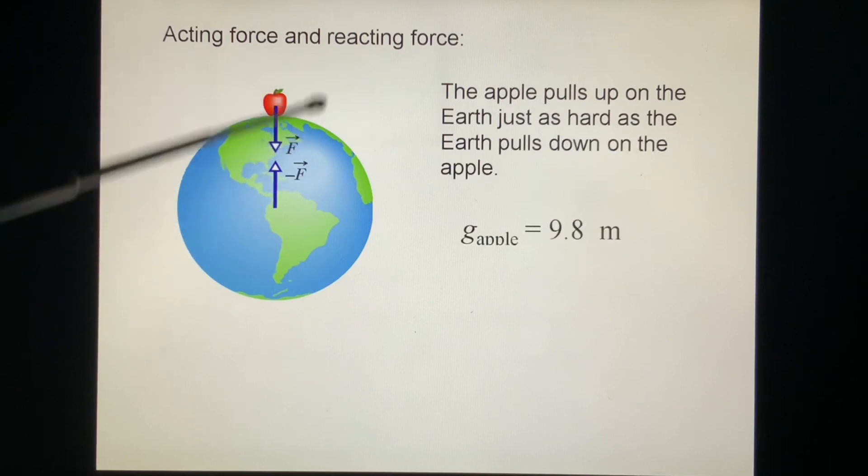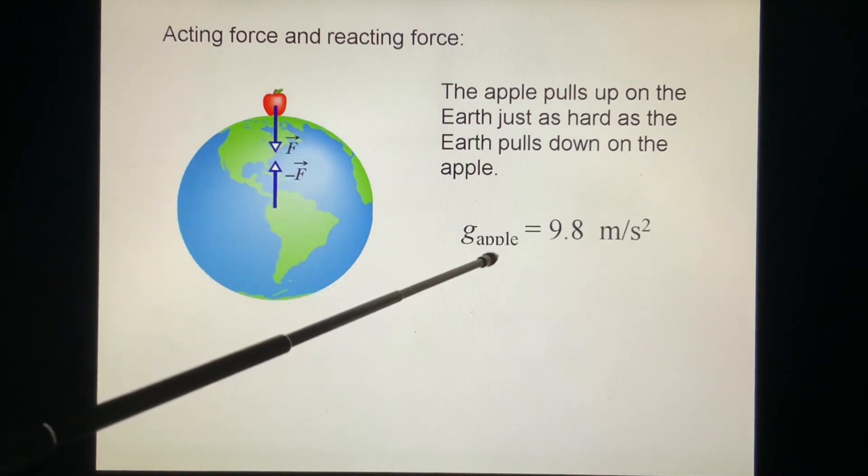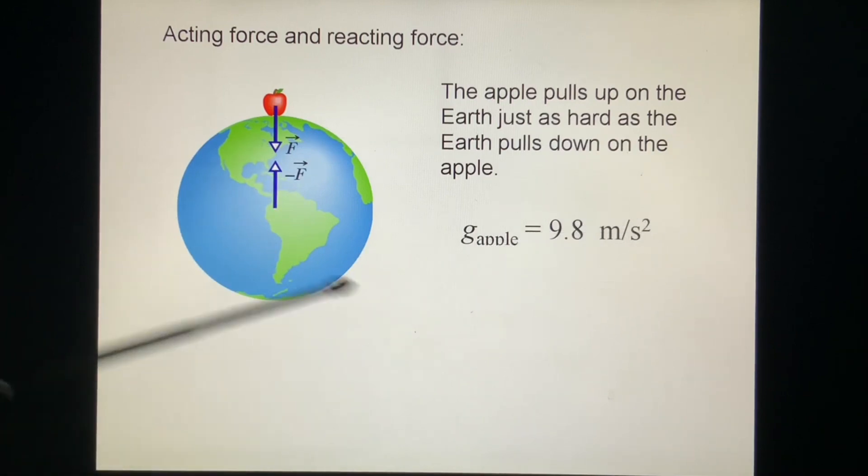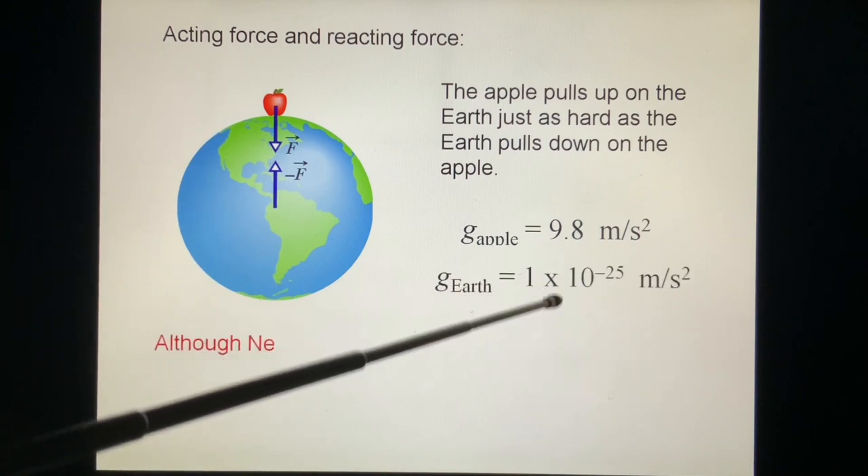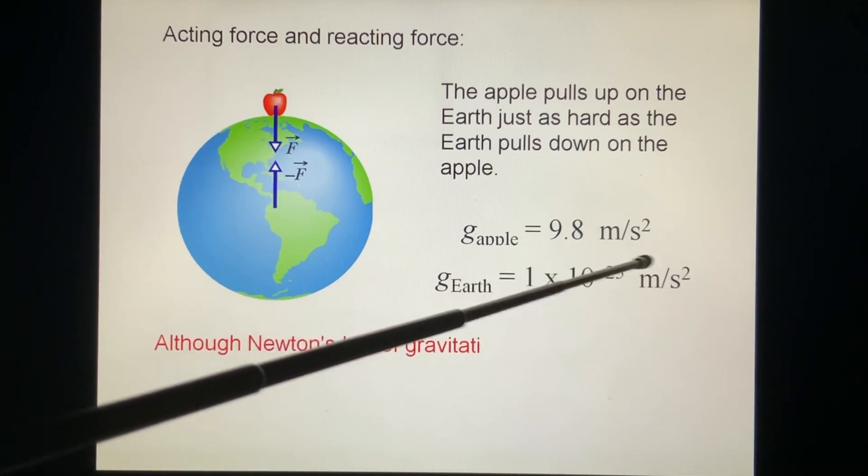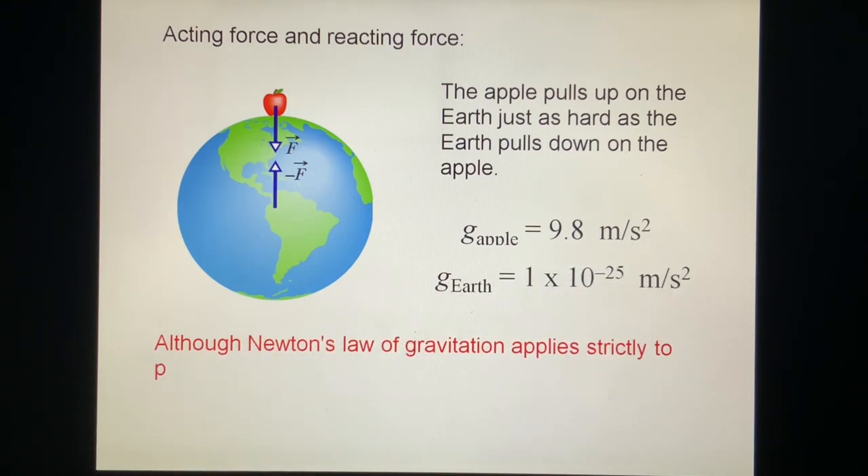The force is the same because the masses are different, so we calculate the acceleration. The acceleration of the apple is 9.8 meters per second squared, but the earth's acceleration is 1.1 times 10 to the minus 25 meters per second squared. Huge difference.